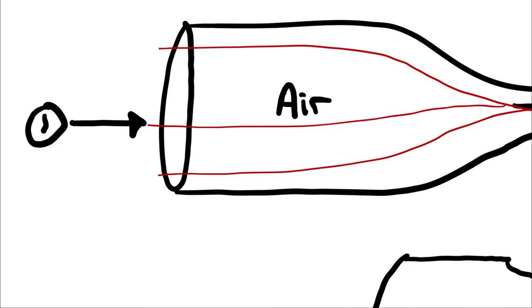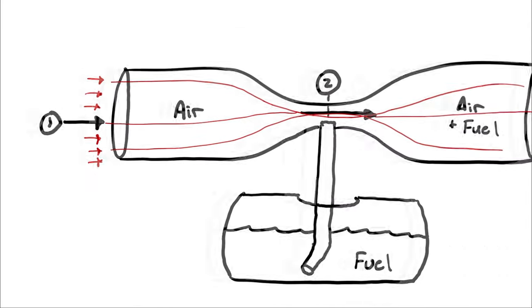Then I'm going to assume that I have uniform flow at states 1, 2, and 3. Or you could think of it as the velocity we have is an average, and that the flow profile doesn't affect the operation of the device.